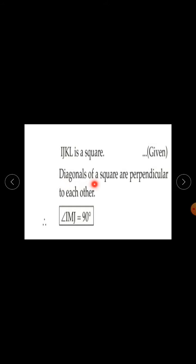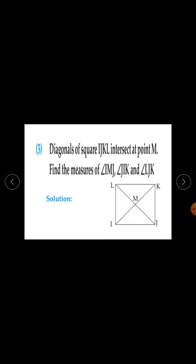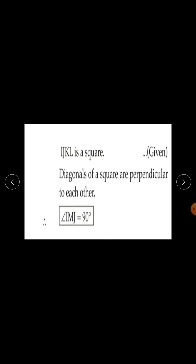Diagonals of a square are perpendicular to each other. Therefore angle IMJ is equal to 90 degrees.